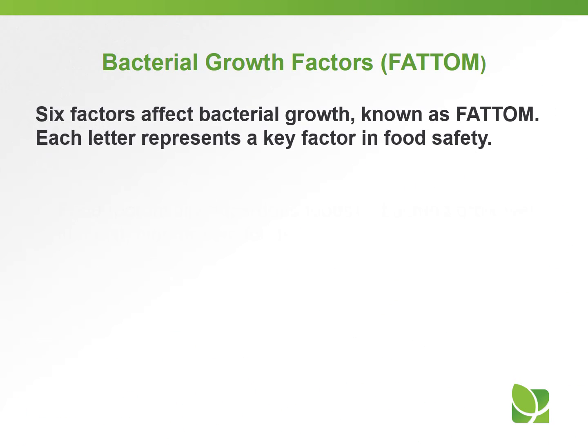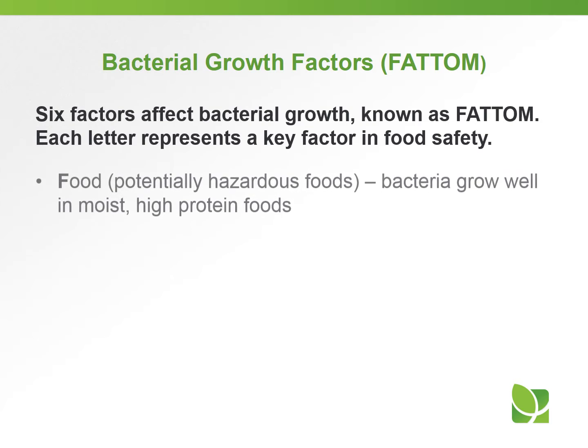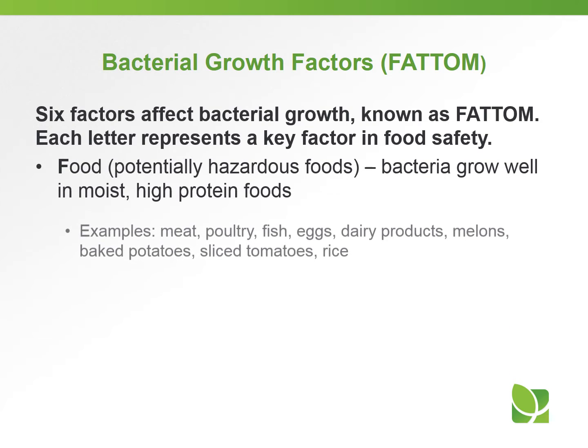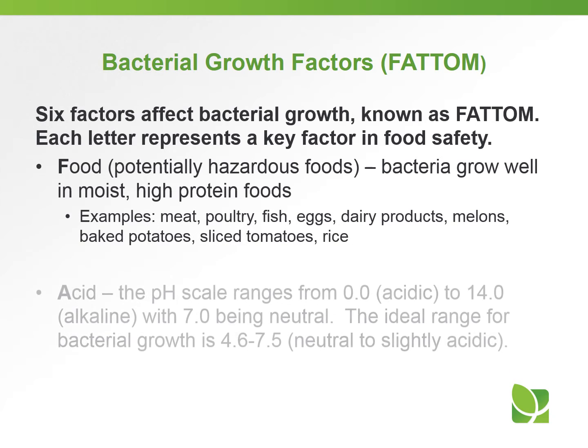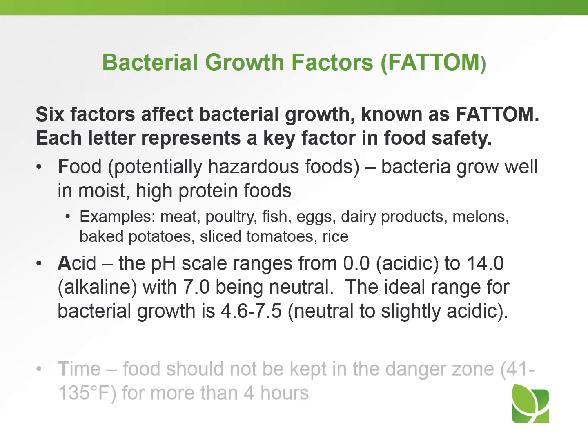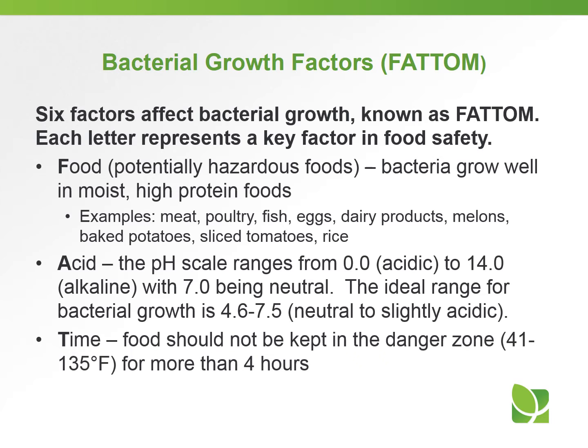Let's talk about bacterial growth factors, often called FAT TOM. Six factors affect bacterial growth, and each letter represents a key factor in food safety. F stands for food — potentially hazardous foods — where bacteria grow well in moist, high-protein foods such as meat, poultry, eggs, dairy products, fish, melons, sprouts, baked potatoes, etc. A is for acid: the pH scale ranges from 0, which is very acidic, to 14, which is alkaline, with 7 being neutral. The ideal range for bacterial growth is 4.6 to 7.5. T is for time: food should not be kept in the danger zone of 41°F to 135°F for more than 4 hours.